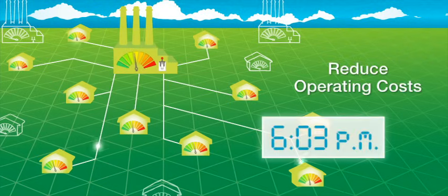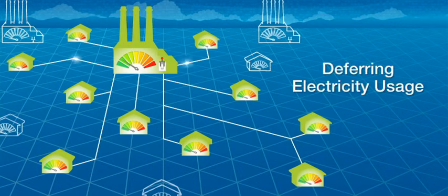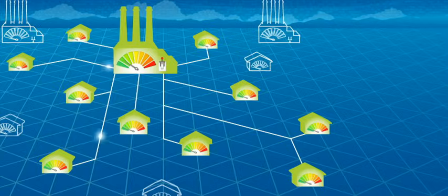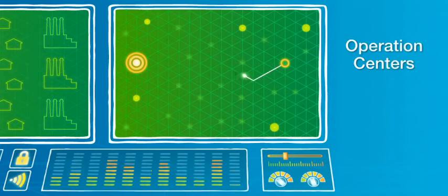As a result, utilities will be able to reduce their operating costs. By deferring electricity usage away from peak hours and having appliances and devices run at other times, electricity production is more evenly distributed throughout the day.